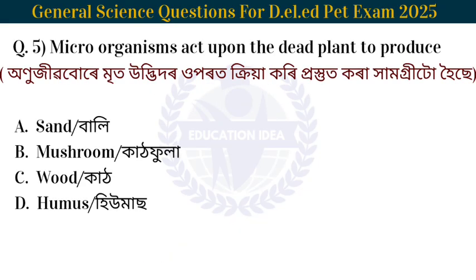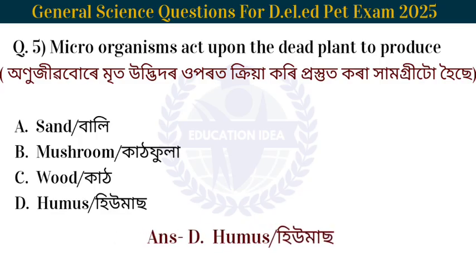Next question: Micro-organisms act upon dead plants to produce — what? The answer is humus. Micro-organisms act upon dead plants, breaking them down to produce humus.